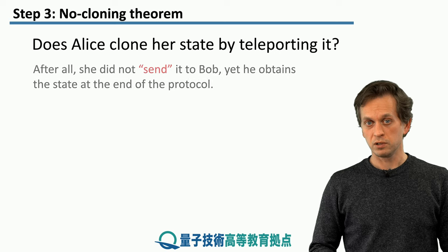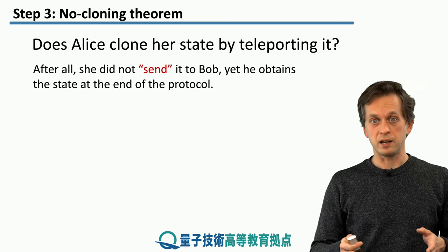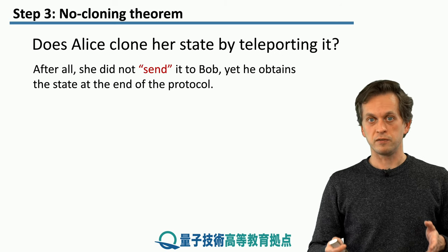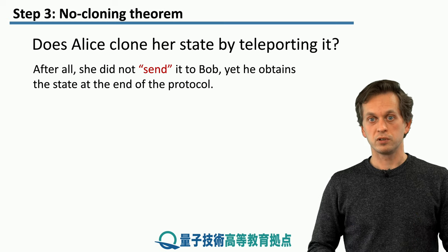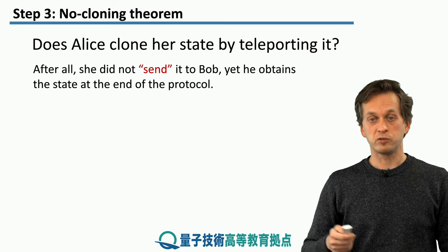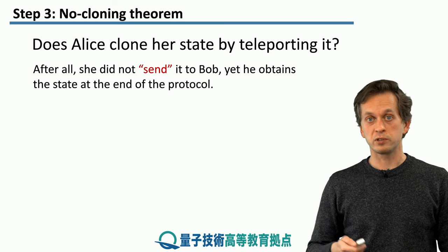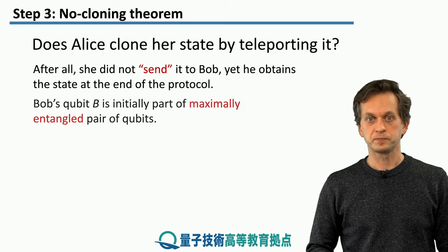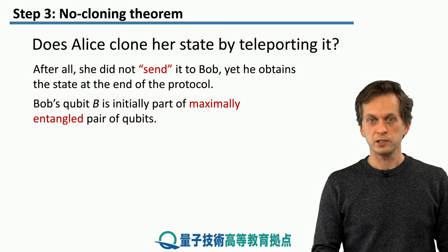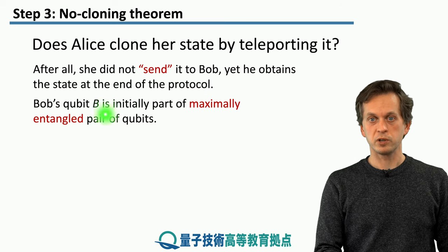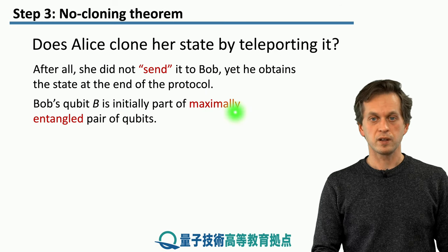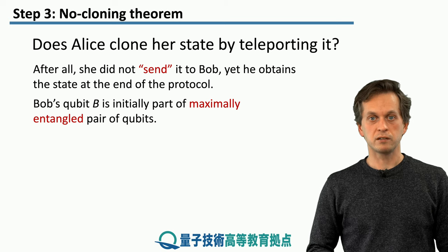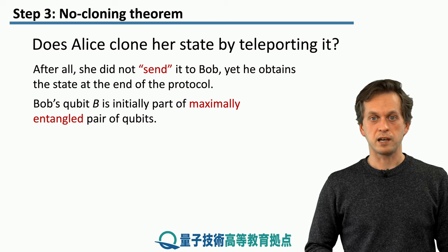After all, she started with the state psi and she did not send the physical qubit to Bob. Yet, at the end of the protocol, we saw that Bob does have the qubit psi. Well, initially Bob's qubit was part of a maximally entangled state. He had one part of the entangled state and Alice had the other.